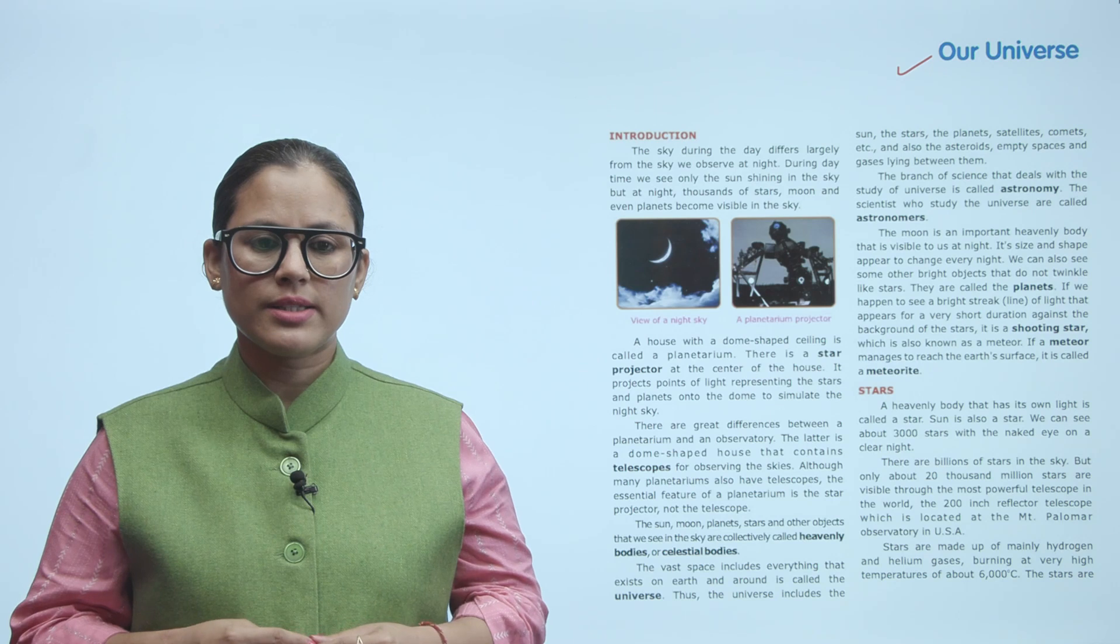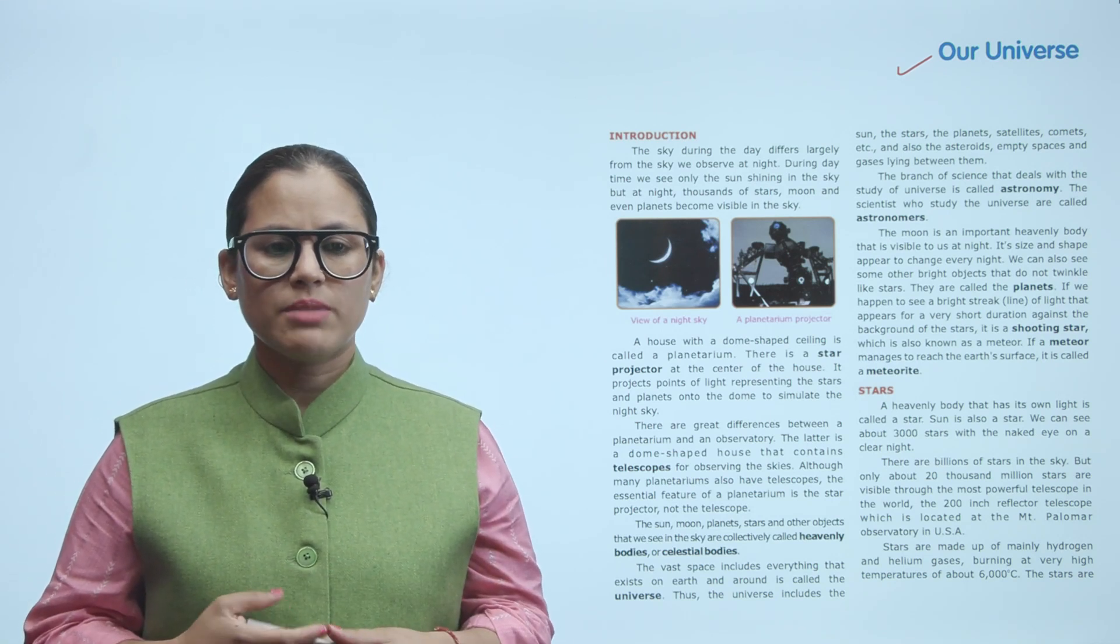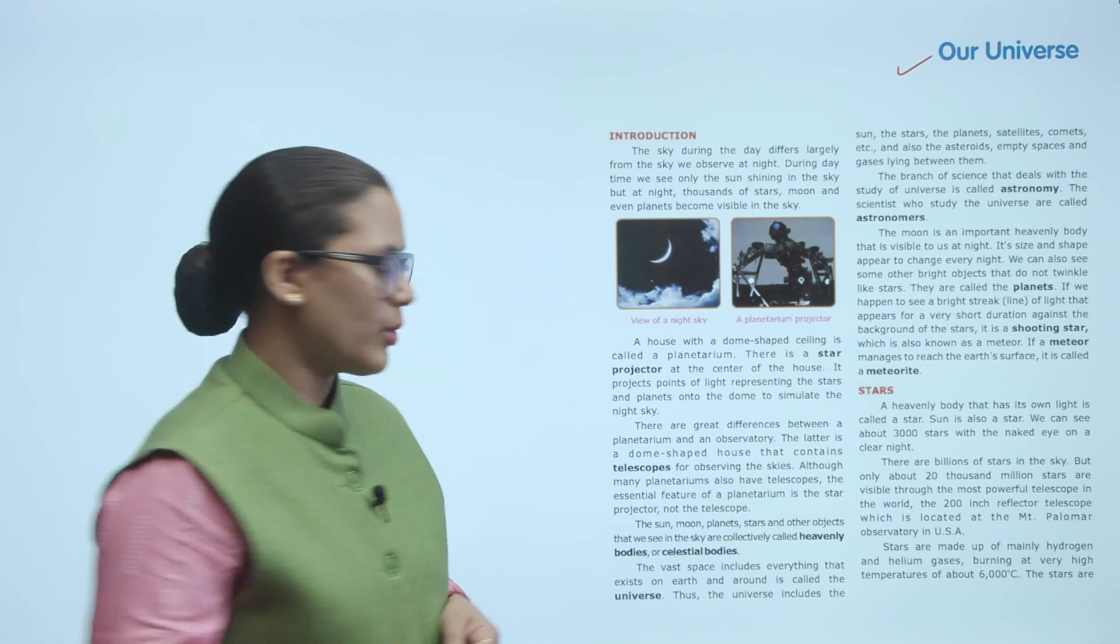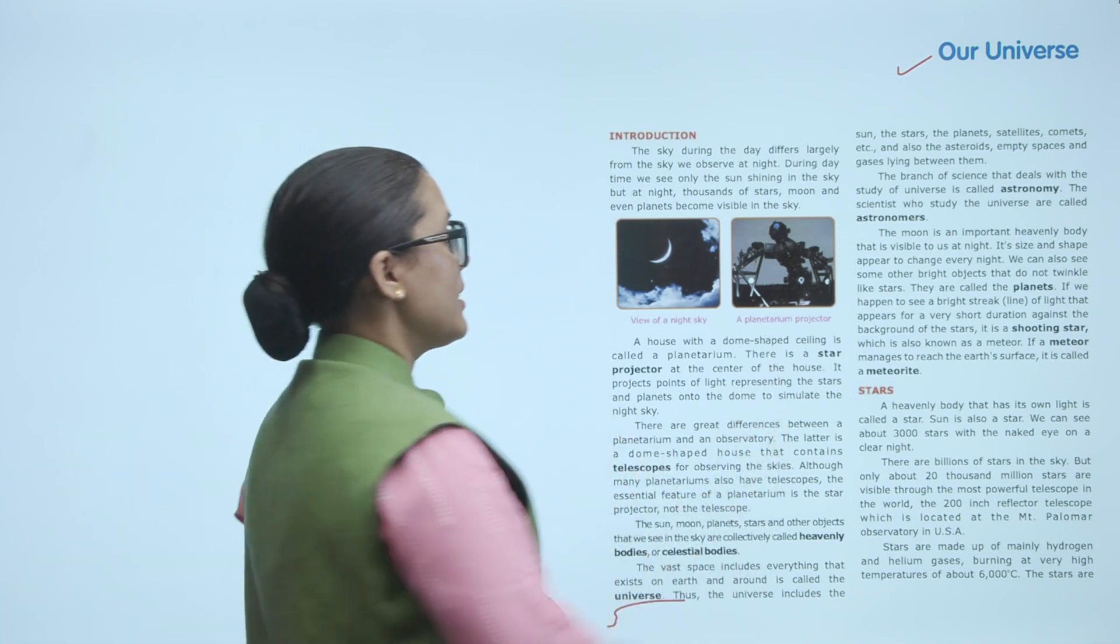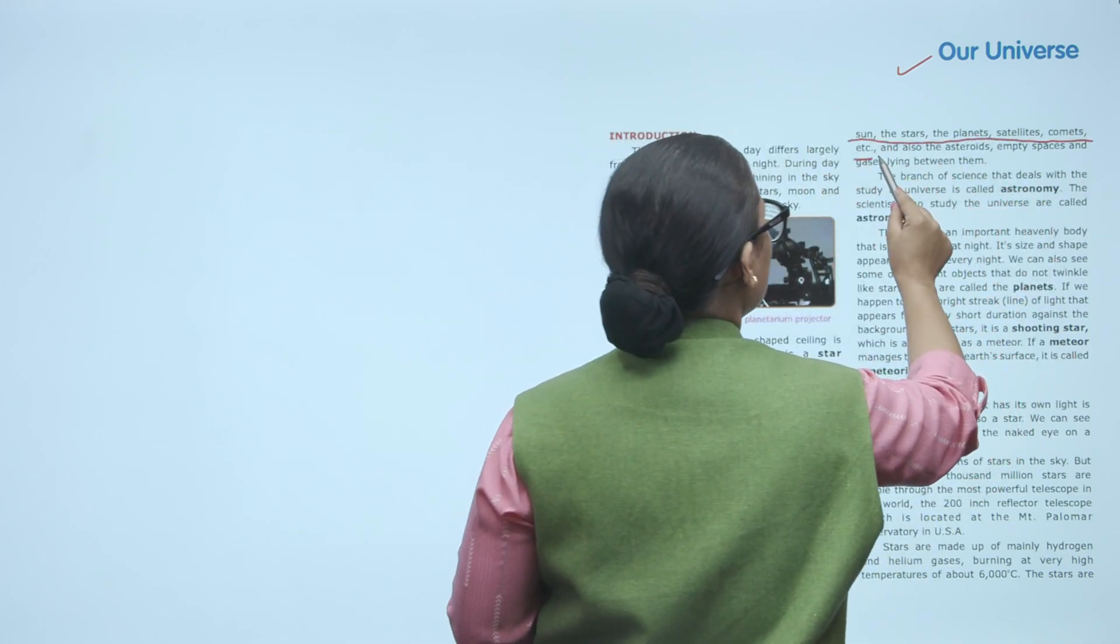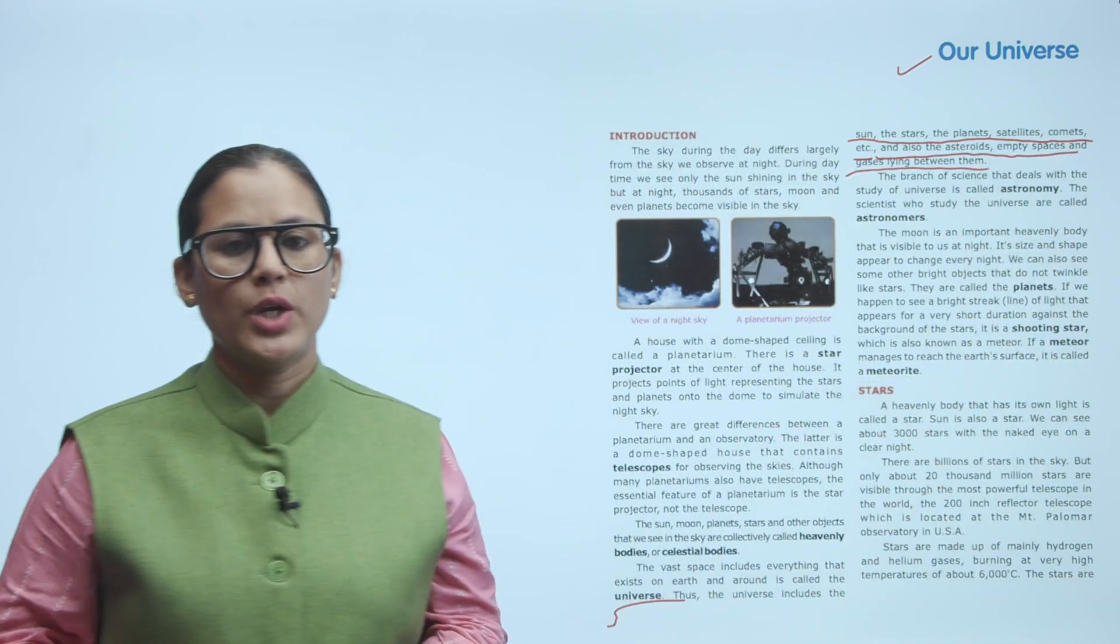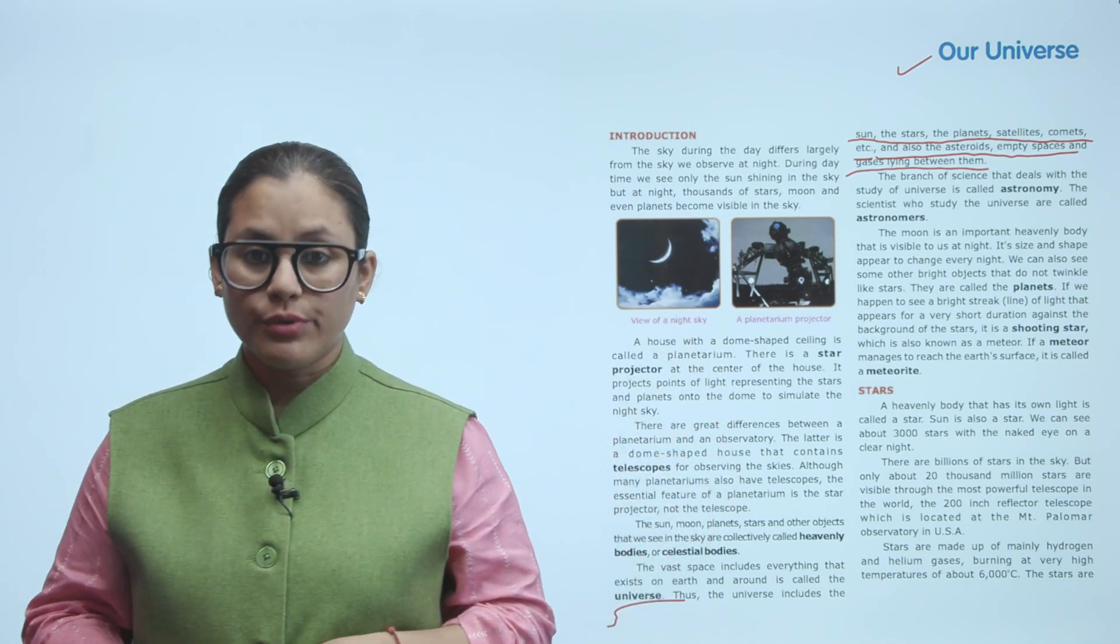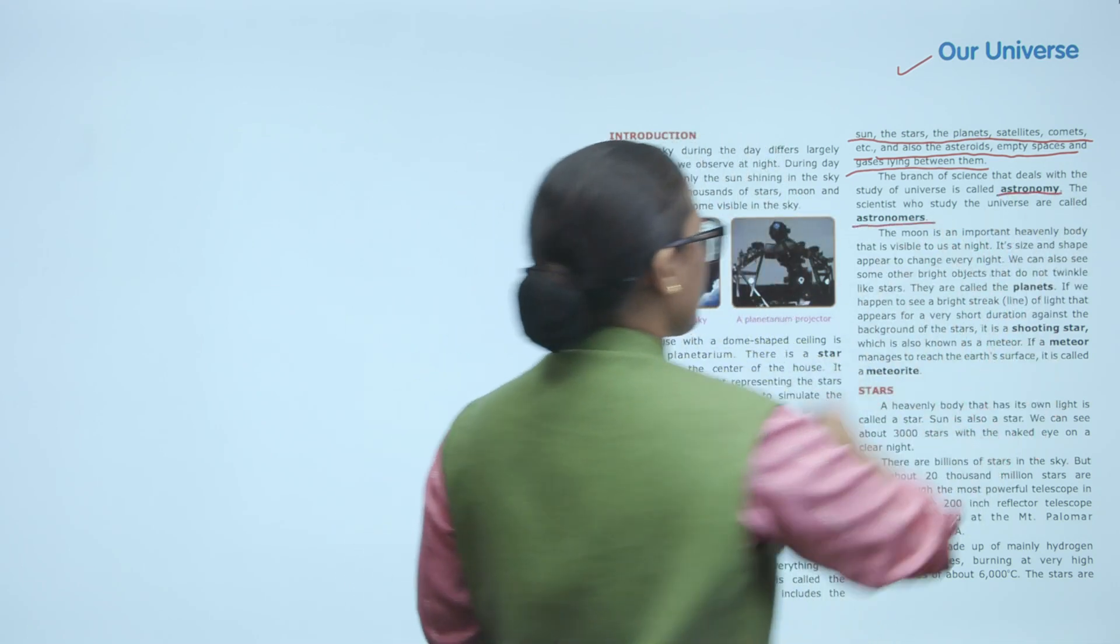The vast space that includes everything that exists on earth and around is called the universe. Thus the universe includes the sun, stars, the planets, satellites, comets, asteroids, empty spaces, and gases lying between them. The branch of science that deals with the study of universe is called astronomy, and the scientists who study the universe are called astronomers.